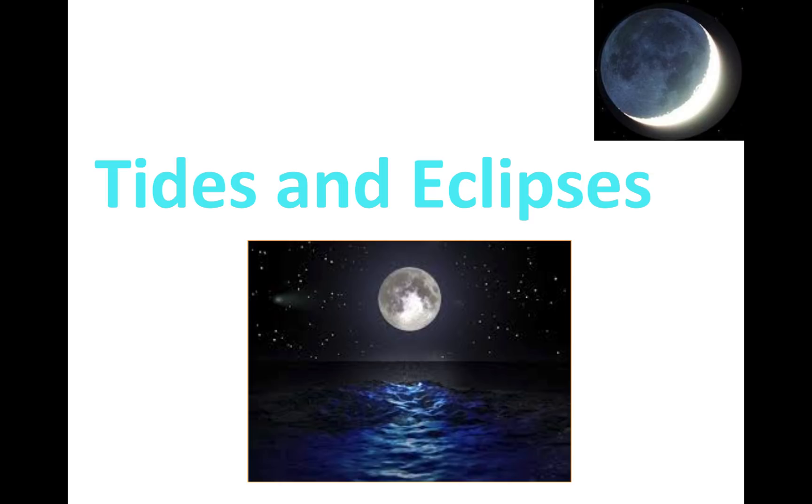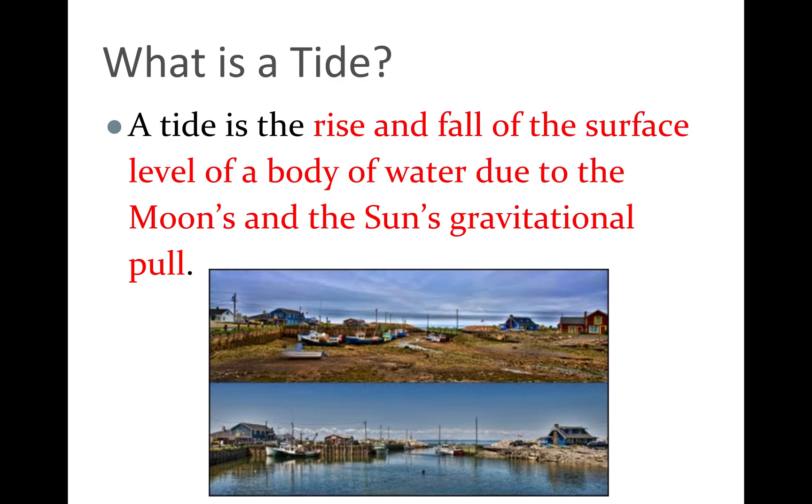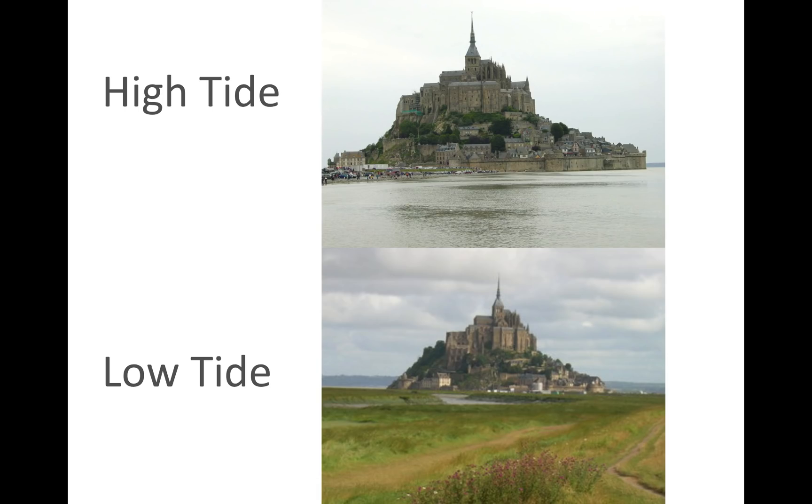The next unit that we had was called tides and eclipses. Tides are when you go to the beach and you build that sandcastle on the beach and a couple hours later you come back and the tide has come up, the water level has come up and washed your sandcastle away. This happens because of the gravitational pull of the sun and the moon. This is the same location during high and low tide, just so you can see the difference.